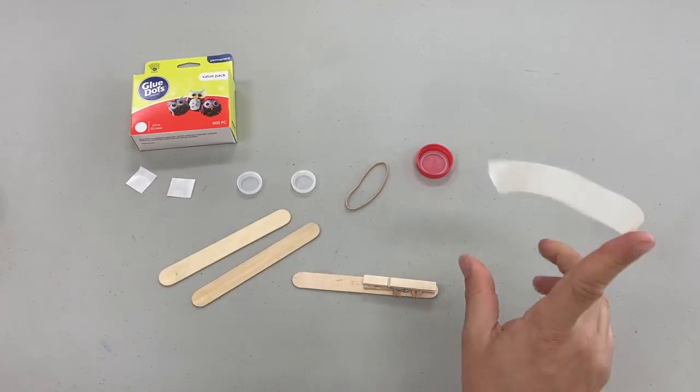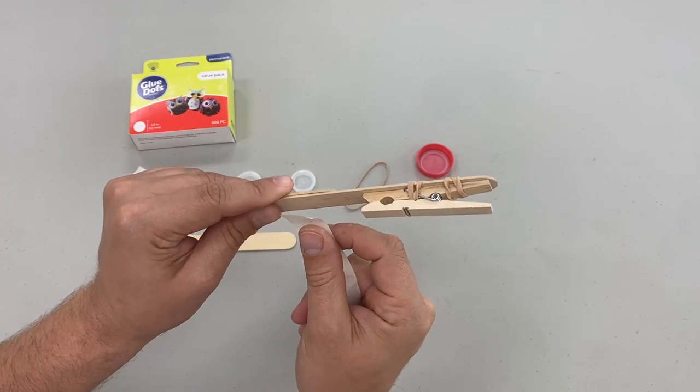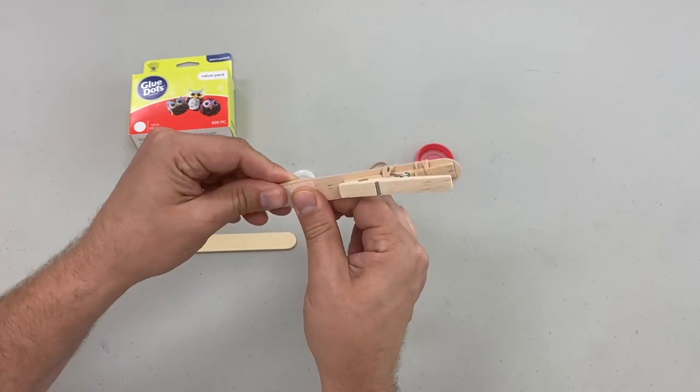Now we're going to take a second craft stick and tape it onto our first one. Make sure your second craft stick is underneath before you start taping so there's nothing in the way of the projectile.